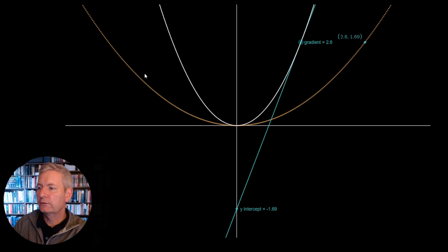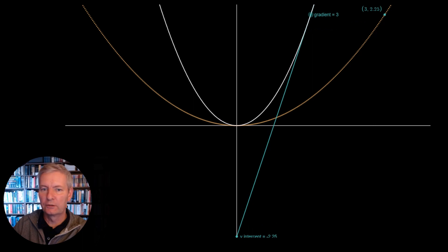Now to understand the Legendre Transform, what we can do is draw a tangent line to the original function in white. And you can see the tangent line in blue moves around the function, which is in white.